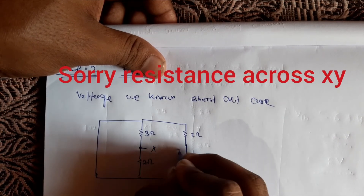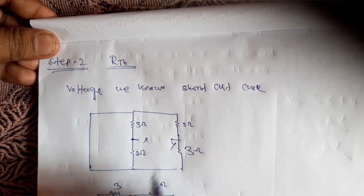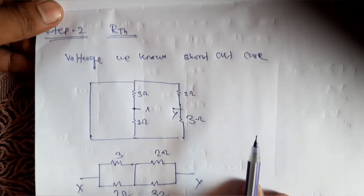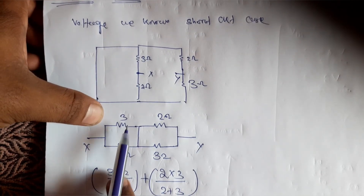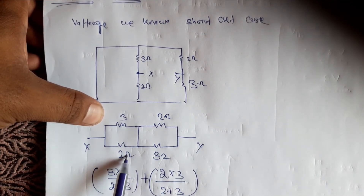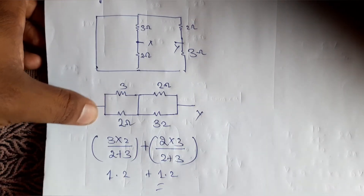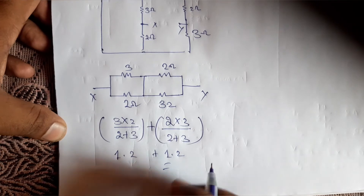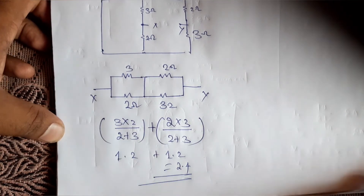This is the circuit for finding Rth. We modify the circuit — the 3 ohm and 2 ohm are in parallel, and the 2 ohm and 3 ohm are in parallel. The equivalent Thevenin resistance Rth is 2.4 ohm.